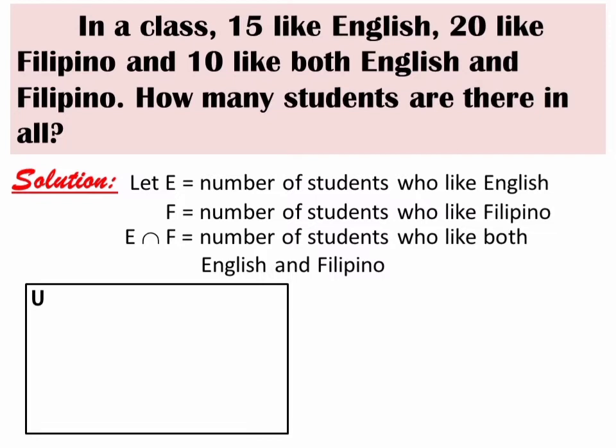Adding them directly will give the wrong answer. So before we make a Venn Diagram, we need to ask: what kind of set are the given sets — are they joint or disjoint? Since 10 students like both subjects, the circles will overlap, so it will be a joint set. We draw the circles like this.